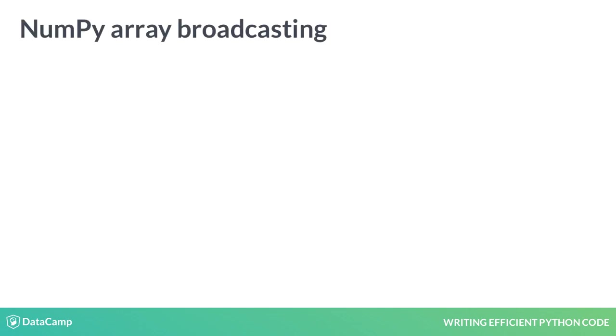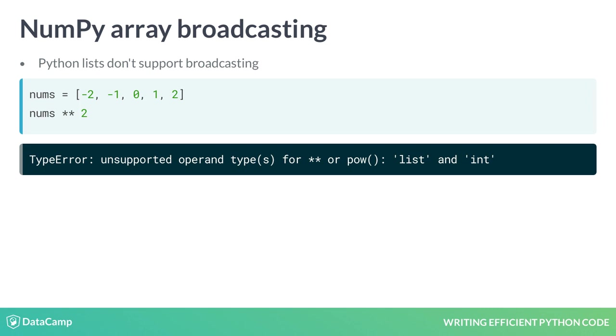When analyzing data, you'll often want to perform operations over entire collections of values quickly. Say, for example, you'd like to square each number within a list of numbers. It'd be nice if we could simply square the list and get a list of squared values returned. Unfortunately, Python lists don't support these types of calculations.